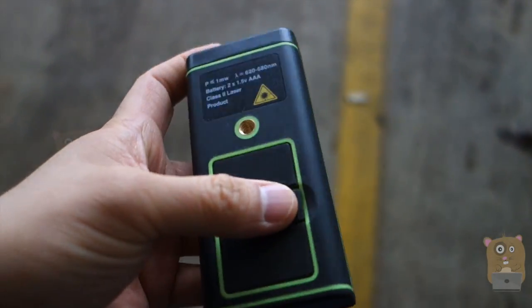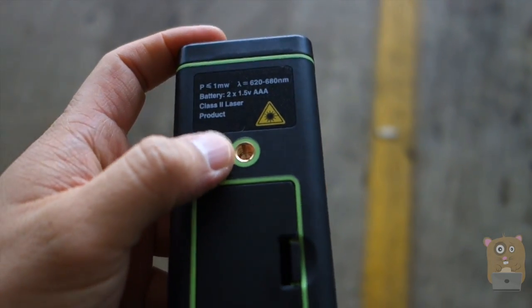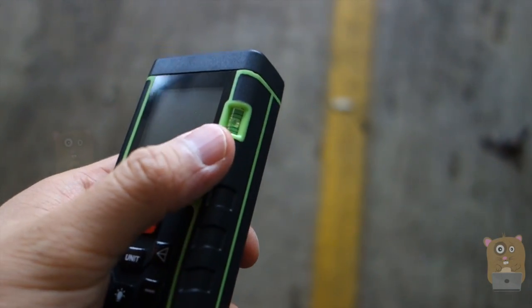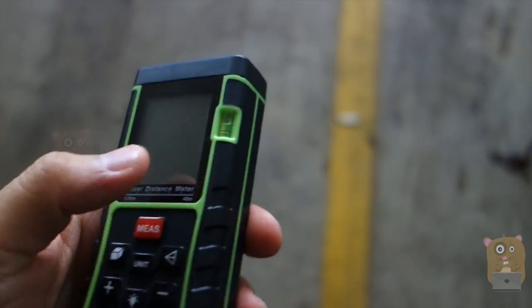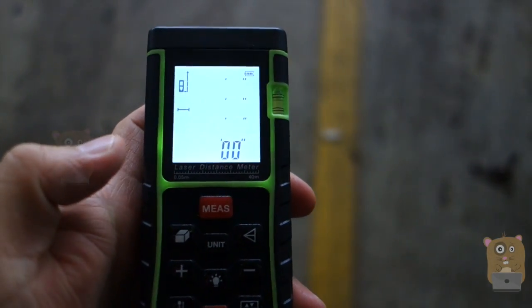It's powered by two AAA batteries right back here. It has a universal tripod thread right here. On this side it has a leveler with a little bulb, and since I put a battery in there I'm just going to turn it on.